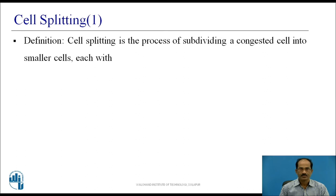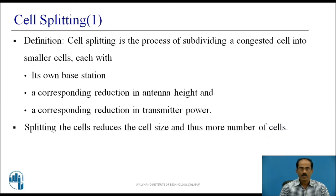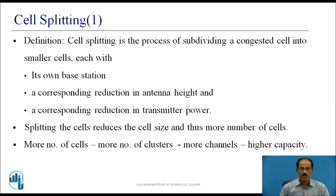Cell splitting is the process of subdividing a congested cell into smaller cells, each with its own base station, a corresponding reduction in antenna height, and a corresponding reduction in transmitter power. Splitting the cells reduces the cell size, resulting in more cells. These smaller cells have their own base stations, but the antennas are shorter and transmit less power. More cells lead to more clusters, more channels, and higher capacity.